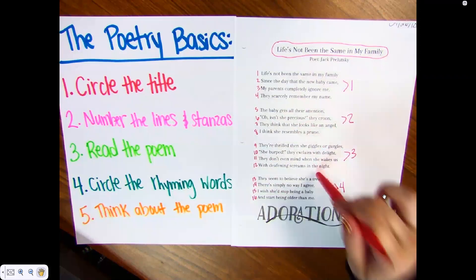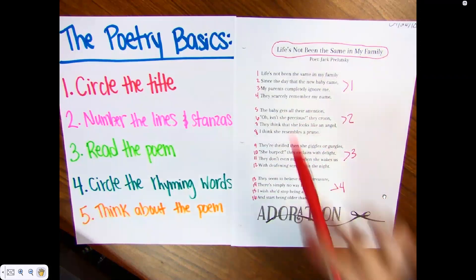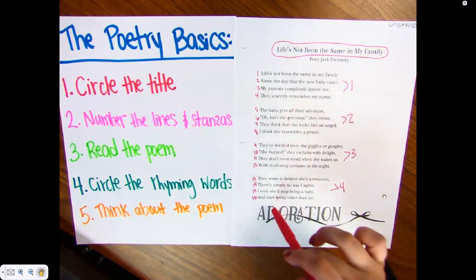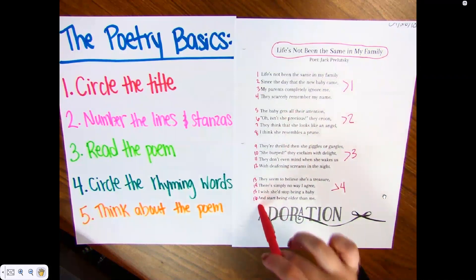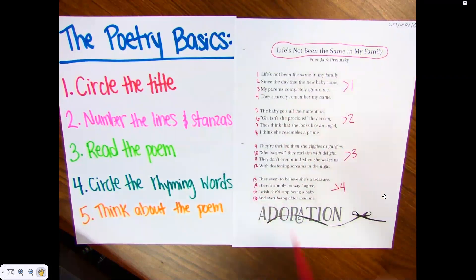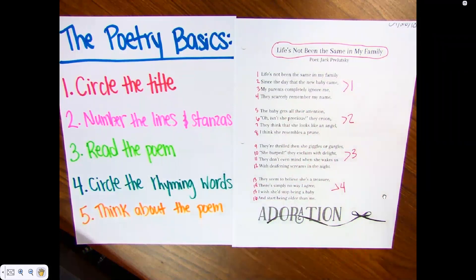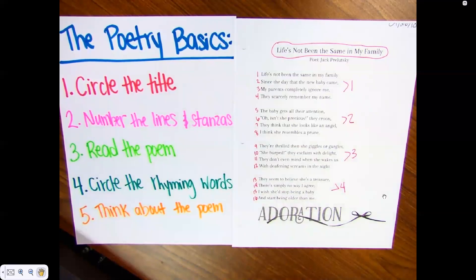So if there's a question on the test that asks how many lines are in the poem, you better not pick eighteen or nineteen because you numbered this poem and said there were sixteen lines. That should be something super easy that we do every single time we see a poem. Now I've numbered the lines and stanzas, so now I'm just going to read the poem. I'm looking for the rhyming words and thinking about the poem.